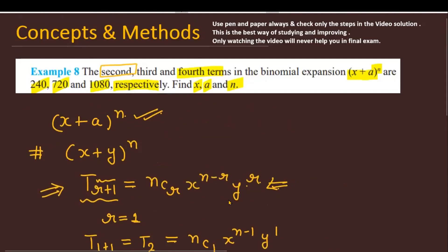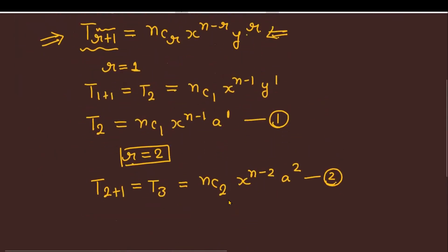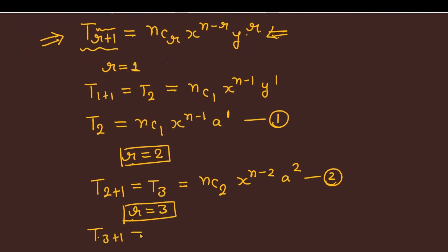Similarly, to find the fourth term we substitute r=3, giving T4 = T(3+1) = nC3 * x^(n-3) * a^3. This is equation number 3.